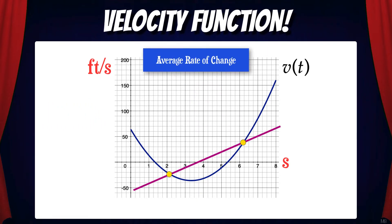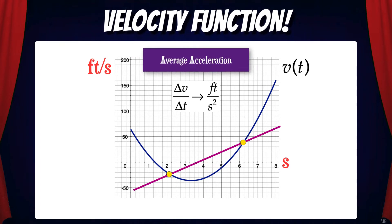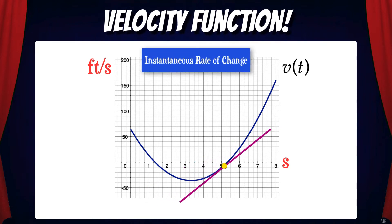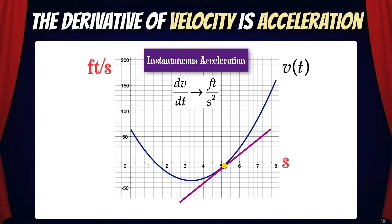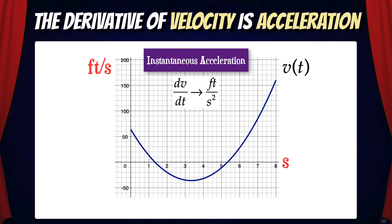Now, if we find the average rate of change over an interval on the velocity function — in other words, the slope of a secant line — we'll get the change in velocity over the change in time. And this is the average acceleration. Note that the units are feet per second squared. Now, if we find the instantaneous rate of change at a single point on the function, we'll get the instantaneous change in velocity over the instantaneous change in time. So in summary, we can say that the derivative of velocity is acceleration.